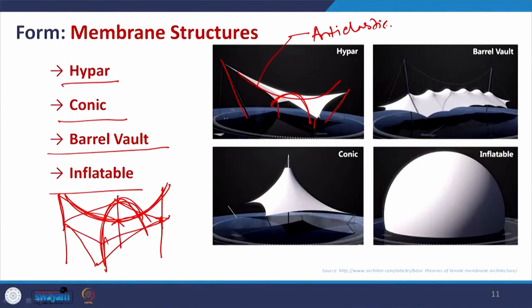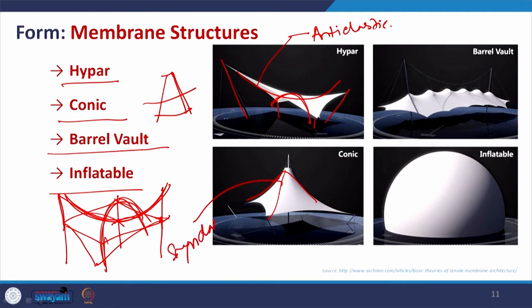Coming to the conic form: try to recall the shape of a cone — if you cut a portion of a cone, that becomes conical. In the example, the curvature is in the similar direction, so this is your synclastic form. Barrel vault is the barrel form — when multiple such arrangements together create a vault kind of form, we refer to it as a barrel vault membrane structure.